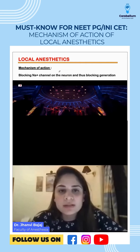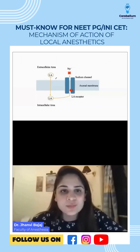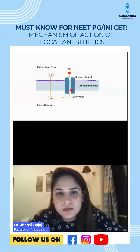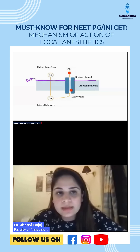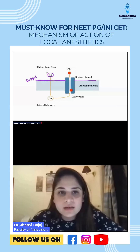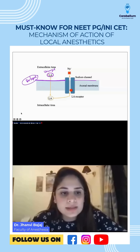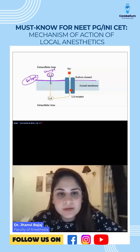They act by blocking — so, imagine this is a nerve. You can see there is a nerve membrane over here. All the nerve membranes are made up of fat, or they are made up of lipids. These local anesthetics are initially in the unionized form. In the unionized form, they are very, very lipid soluble. So what they do is they just cross this lipid membrane of the nerve.